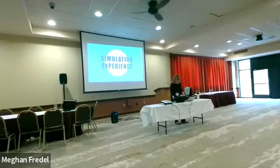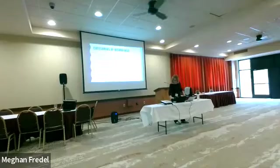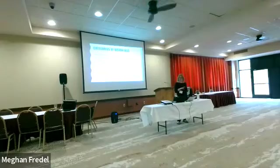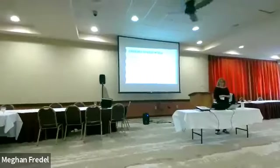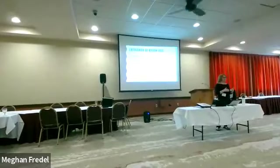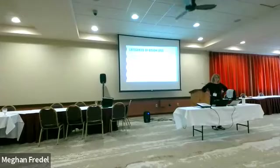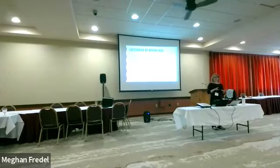I'm going to start with the categories of vision loss. Most visual impairments fall within these categories, and they have decreased visual acuity. I'm going to talk about each one: a central visual field loss, a peripheral field loss, and a cortical visual impairment. You can also have a combination of any of these together.